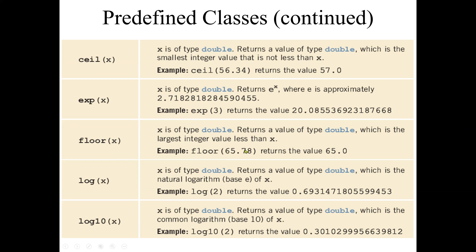Floor ignores the decimal values and approximates down, so 65.78 gives 65. We can also find the log of any value. In college algebra, the log of x can be any value. Here, log means the natural log, and log10 means log base 10. The parameter x is of type double, and it returns a value of type double, which is the natural log base e of x. Log base 10 of 100 gives 2, and log base 10 of 2 gives approximately 0.30102.